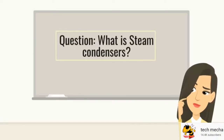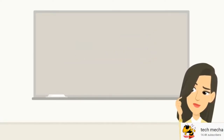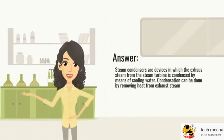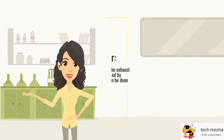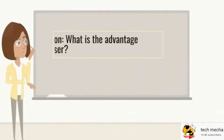What is a steam condenser? Steam condensers are devices in which the exhaust steam from the steam turbine is condensed by means of cooling water. Condensation can be done by removing heat from exhaust steam using circulating cooling water.